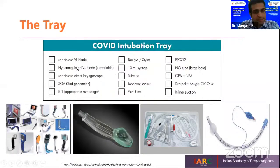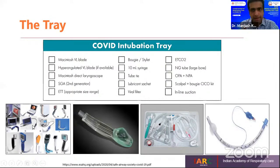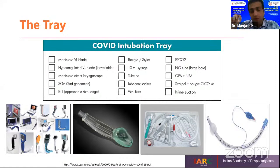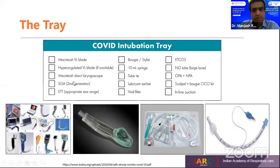Comparing the pre-COVID intubation tray to the current one, the video laryngoscope now plays an important role — to avoid face-to-face contact between the intubator and patient. A typical COVID intubation tray should have a video laryngoscope blade, direct laryngoscope, second-generation supraglottic airway such as IGEL or ProSeal LMA, and a scalpel plus bougie cricothyroidotomy set in case we are not able to access the airway.